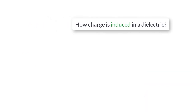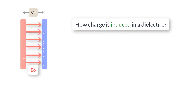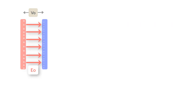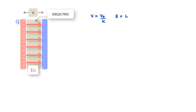Now let us understand how charge is induced in a dielectric and how polarization of molecules happens. When a dielectric is placed between capacitor plates that have a fixed charge Q on them, the potential difference decreases by a factor of K. If the potential difference reduces by a factor of K, the electric field E must also decrease by the same factor. So if E₀ was the field value before inserting the dielectric, the electric field after inserting it should be E₀/K.